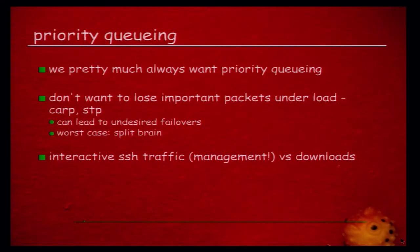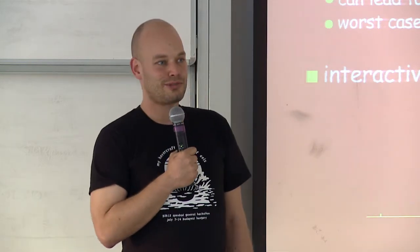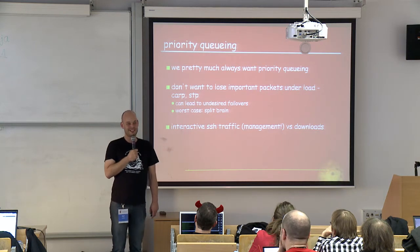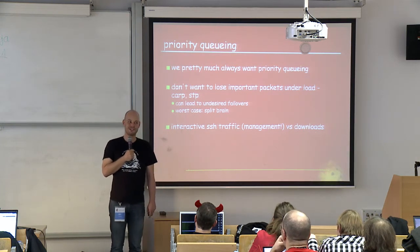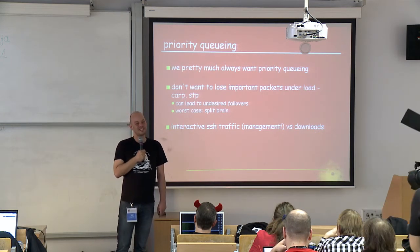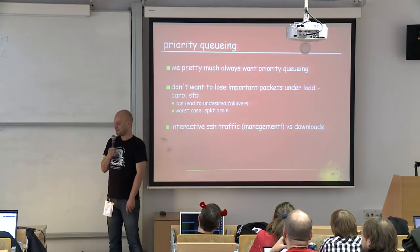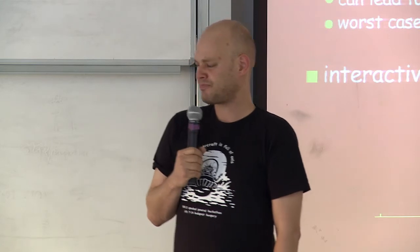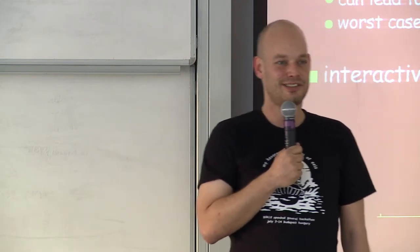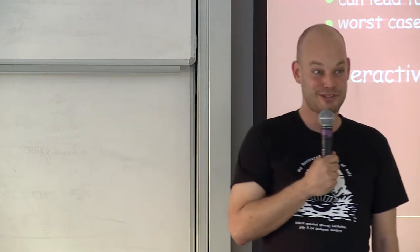Priority queuing is something we pretty much always want — there's always certain traffic you don't want to lose even under severe load. You don't want to lose CARP announcements. If you lose them, your backup host will think the master is dead and take over, giving you a master-master split-brain situation where both think they must process traffic, which leads to duplicated packets and all kinds of interesting problems. The same is true for spanning tree announcements. And you want to prioritize SSH management traffic so you can still SSH into your router.